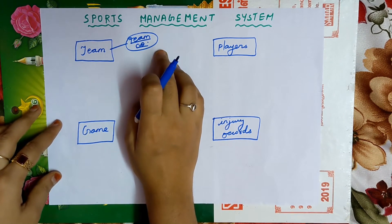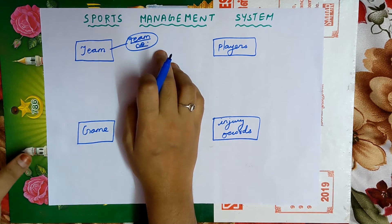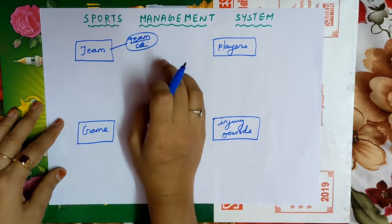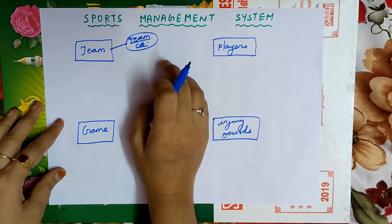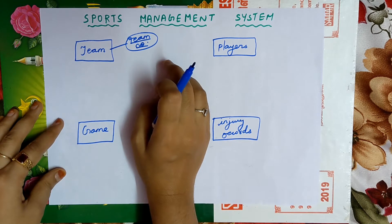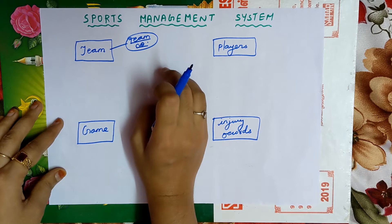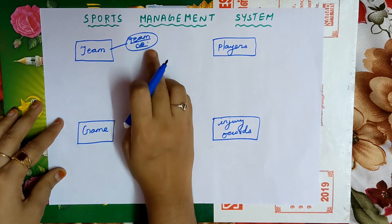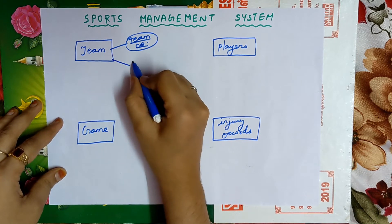Team number is a primary key because every team will have a unique number — no two teams share the same team number. That is why team number is a primary key, and we underline the primary key when drawing an ER diagram. The next attribute is city.